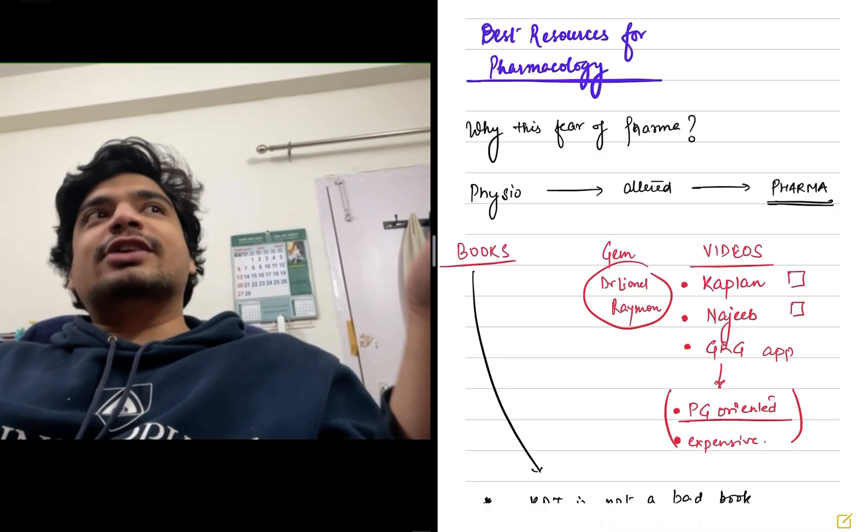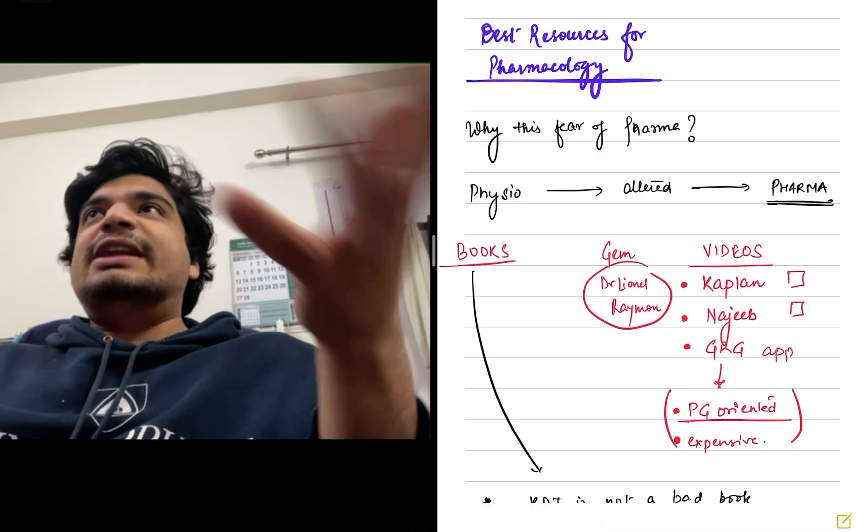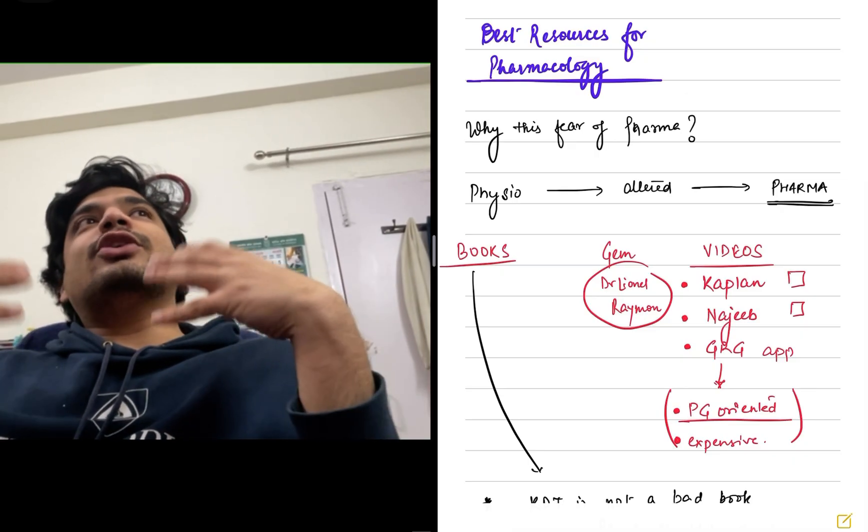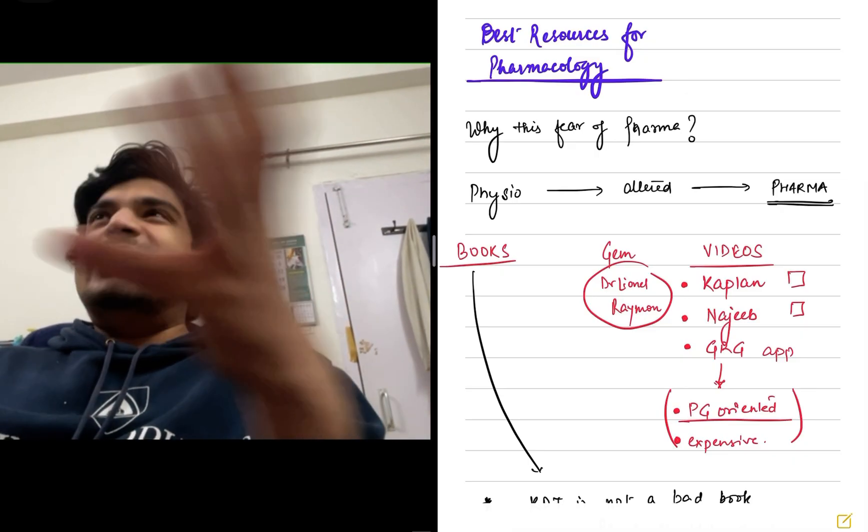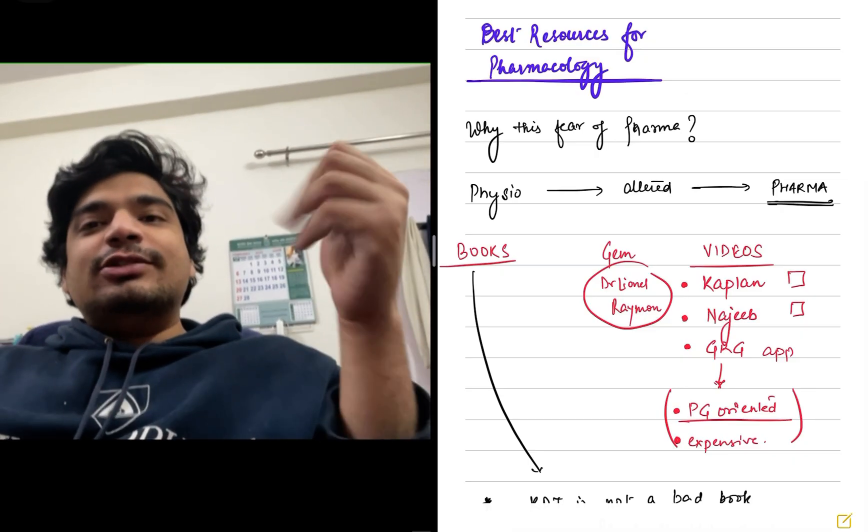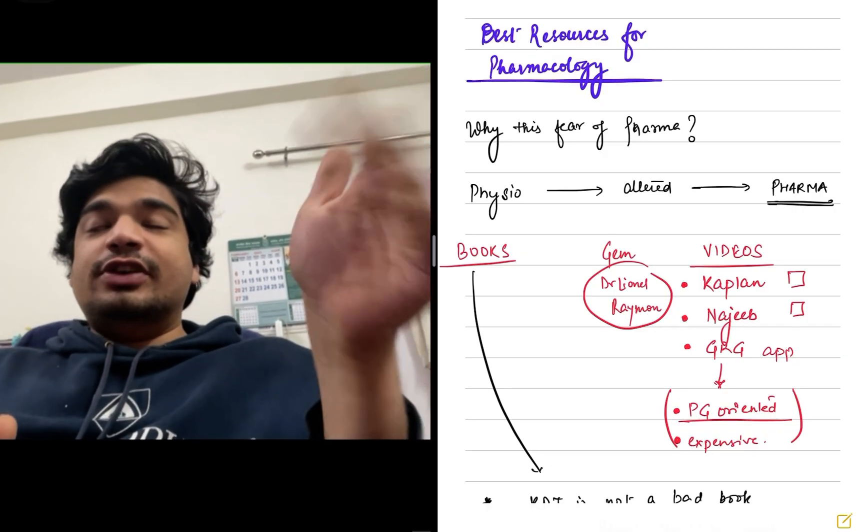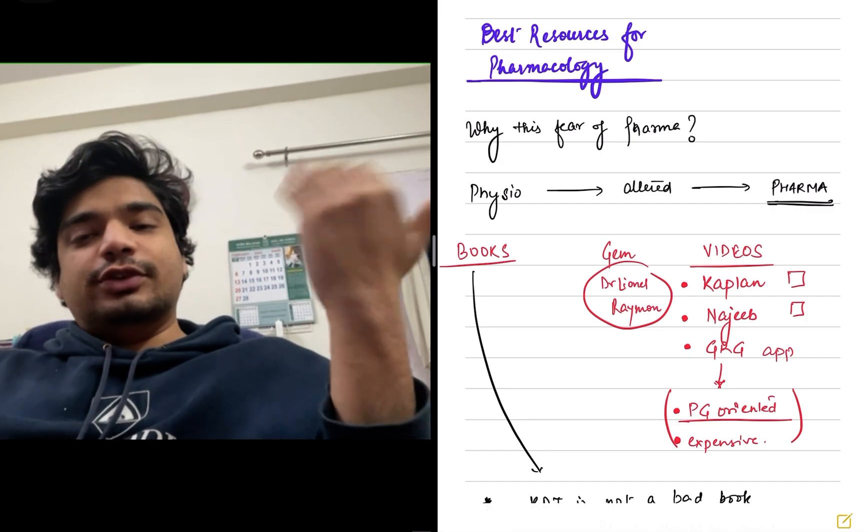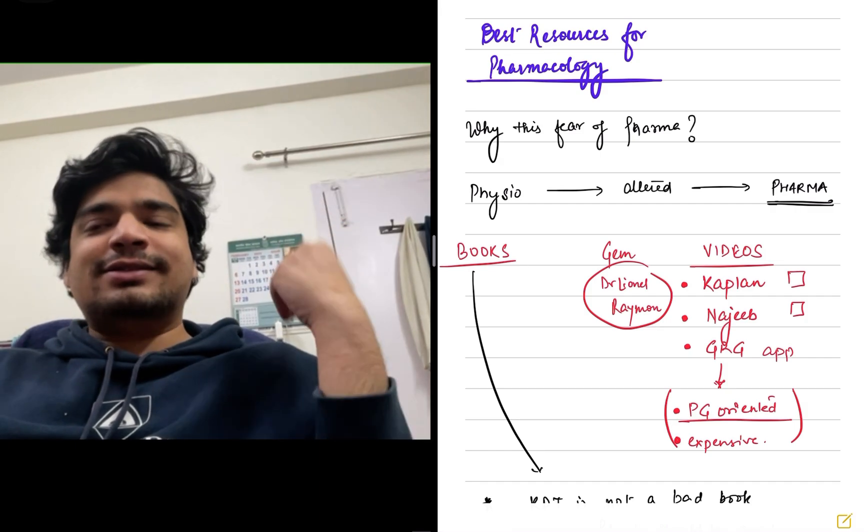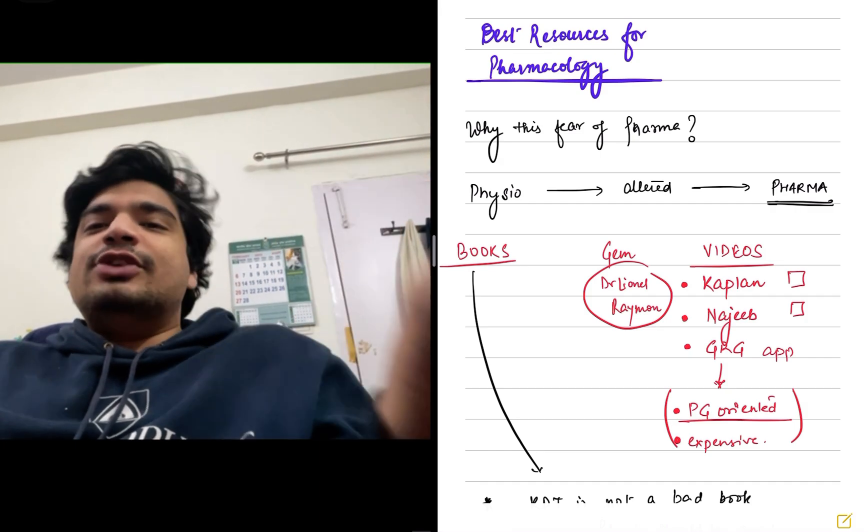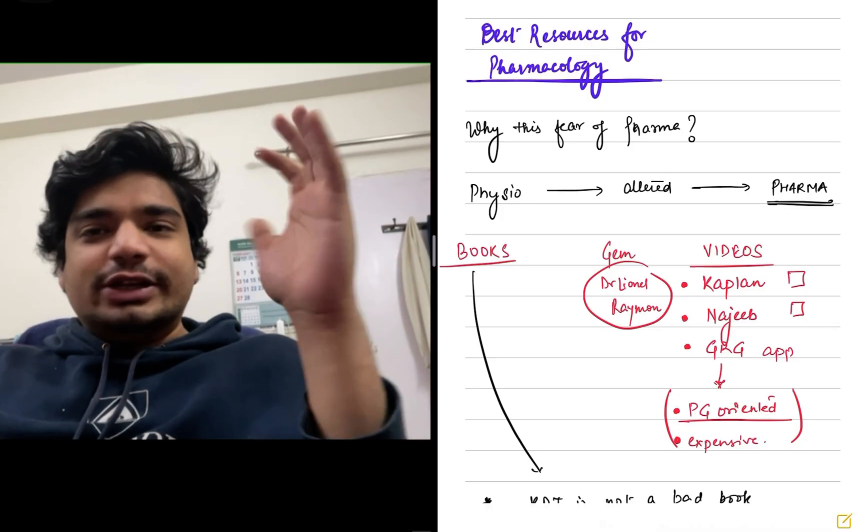Similarly, most of your drugs like beta blockers, alpha blockers, alpha agonist, atropine, things like that, they're just based on your adrenergic and cholinergic physiology. So if you had a good physiology, which I believe a lot of you do have, because physiology is the subject which almost everyone likes, then altering the physiology is what pharmacology is. So there's no need to fear pharma.